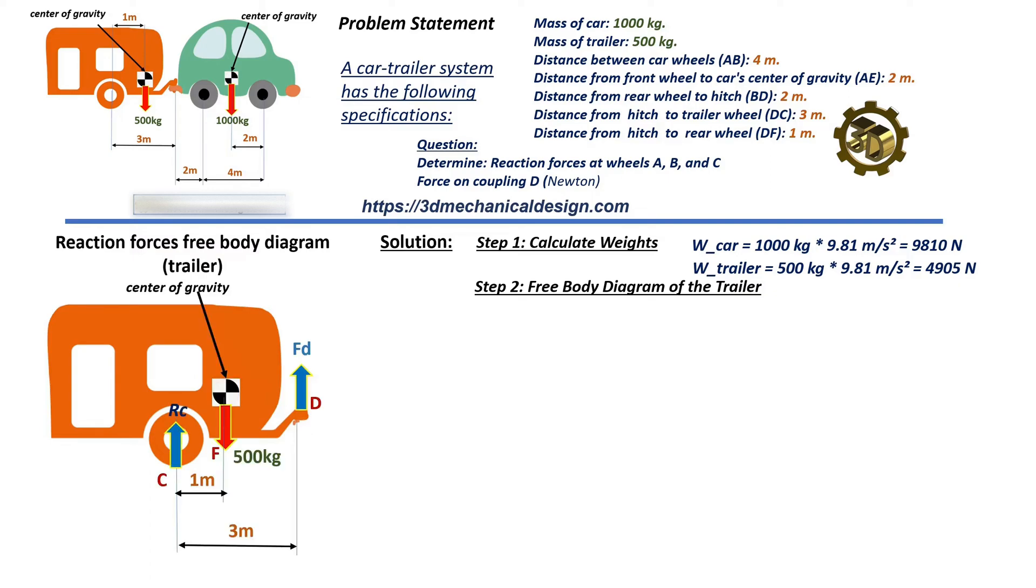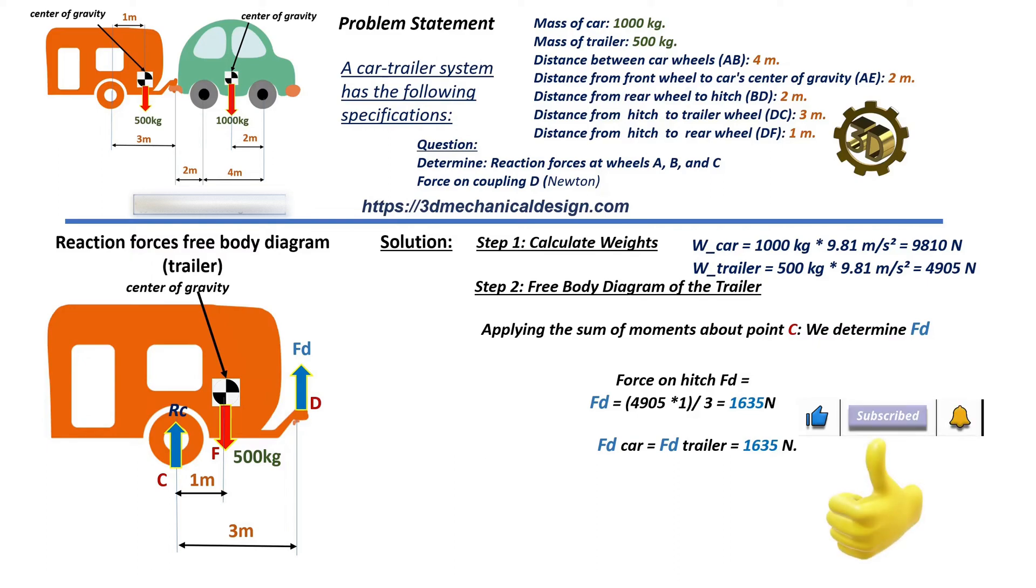Applying the sum of moments about point C, we determine force on hitch FD. FD equals 4,905 times 1 divided by 3 equals 1,635 newtons. FD car equals FD trailer equals 1,635 newtons.